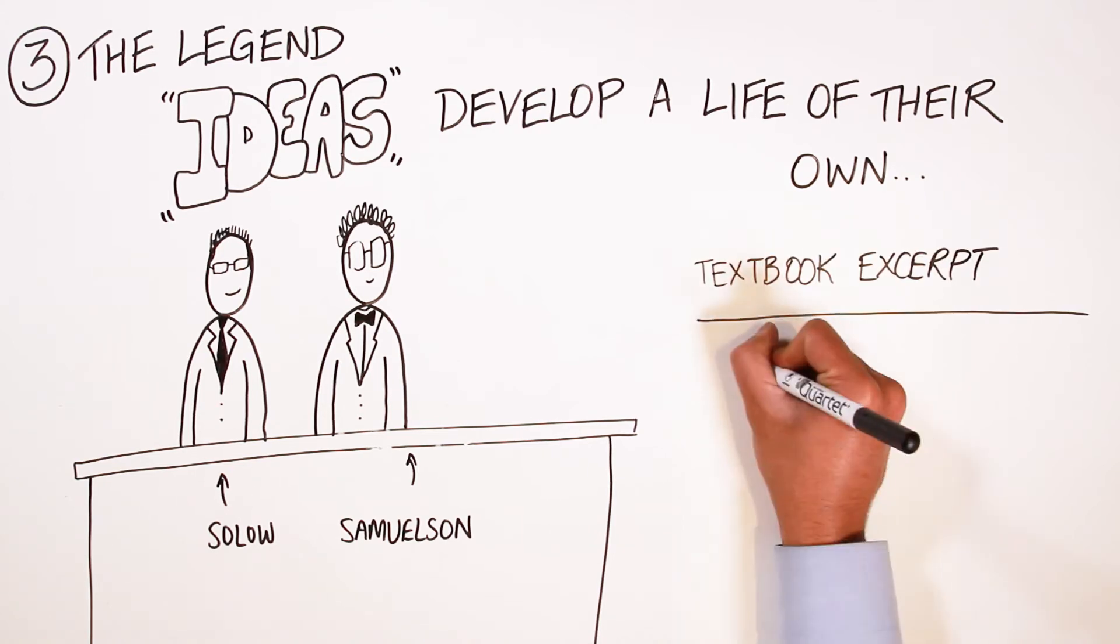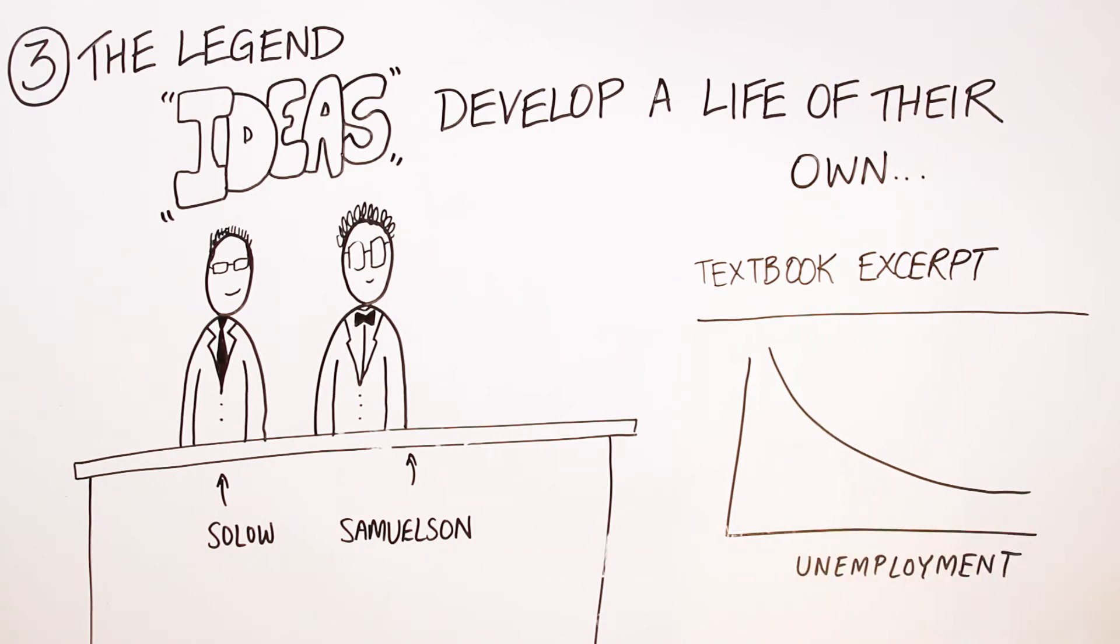First, they saw the Phillips curve. That's what they call the downward-sloping relationship between the unemployment rate and wage rates. Bill Phillips himself never used the term.